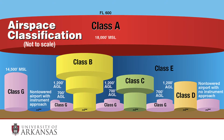There are seven types of airspace in the United States: A, B, C, D, E, G, and special use.